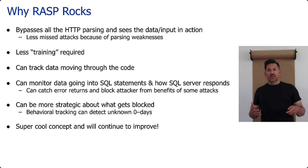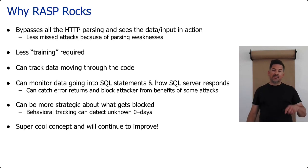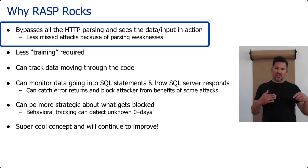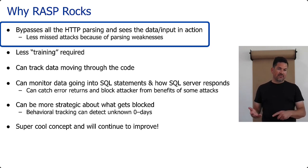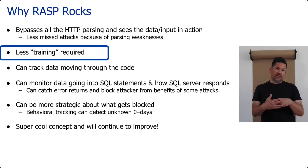Why they rock. What I love about this is that RASP is in the right place. If you watched the episode about web application firewalls, the WAFs, I didn't have a lot of good things to say because they're too early in the process. RASP is not — RASP is at the right place, in my opinion. They have already bypassed HTTP parsing, so they can see the actual data going into the application. They can deal with all of the data structures that the application is seeing. So they don't miss things the same way a traditional WAF would. There tends to be less training because they're right at the application.